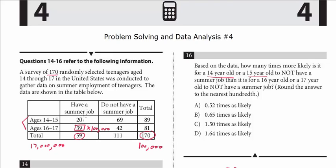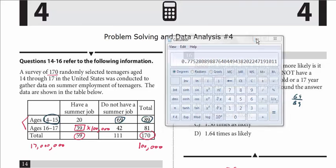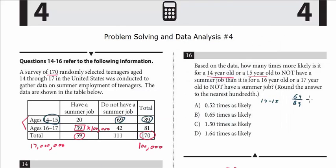So here, 14- or 15-year-old, the total is 89. Not to have a summer job would be this. So this is the ratio of 14 to 15. Not to have a job, it's going to be 69 over 89. And we could just use our calculator again. And that's going to be 69 divided by 89. That comes out to about 77.5 percent. We want to see how many more times likely it is for this category, 14-year-old or 15-year-old not to have a summer job.